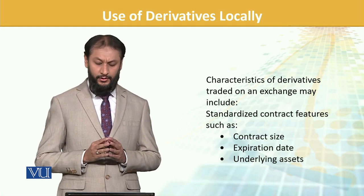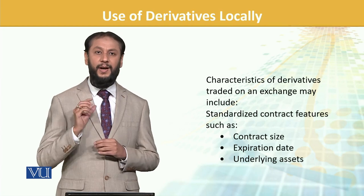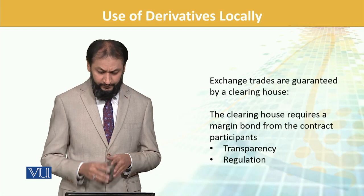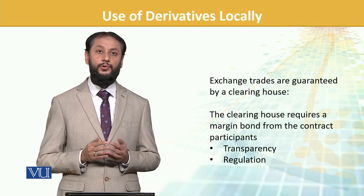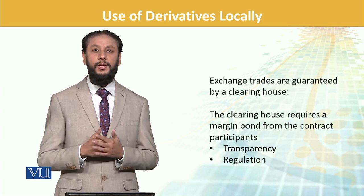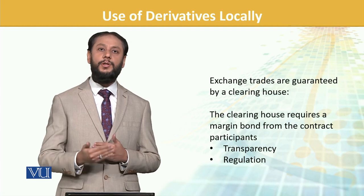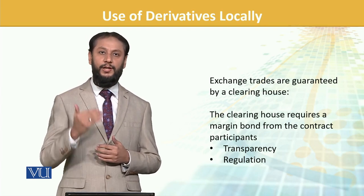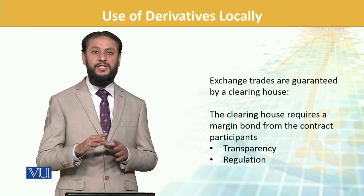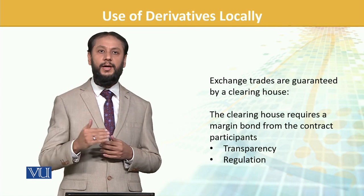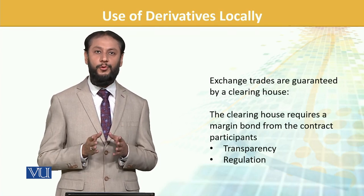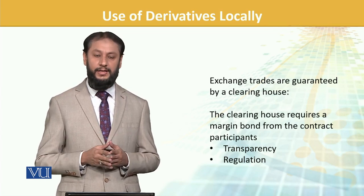Characteristics of derivatives traded on exchange include standardized contracts — such as the contract price, expiration date, and underlying coin — these are standard terms that specifically exist in derivatives. Exchange traders are guaranteed by the clearing house; the other party is the clearing house, so there's no risk of the counterparty defaulting. You have to maintain margin, so exchange gives you the advantage that in any case, if the price moves in your favor, you will definitely get your return. This also brings transparency — trades are clearly visible, you can see how many buyers and sellers there are and what the price is. These trades are regulated as well, on the stock exchanges where derivatives are traded, credible ones are being regulated.